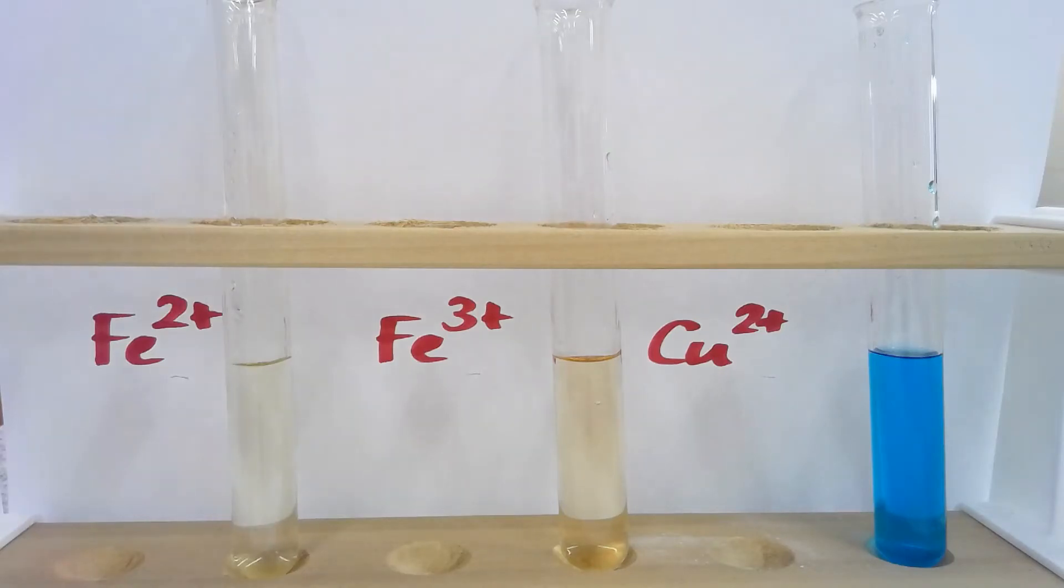This is an experiment that we can use to positively identify some transition metal ions. In the left-hand test tube, we have a solution containing Fe2+ ions. In the middle, our solution contains Fe3+ ions, and on the right-hand side, our solution contains copper 2+ ions.